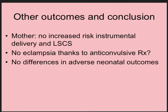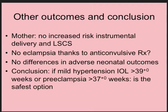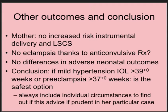In conclusion, the induction of labour group had significantly less hypertension and hence less use of antihypertensive drugs — that was the main difference found in this study. The mothers had no increased risk for instrumental vaginal delivery or caesarean section when induced, and eclampsia did not occur in either group, due to prudent use of magnesium sulfate IV. There were no differences in adverse neonatal outcomes. The conclusion: for mild hypertension, induction of labour after 37 weeks is recommended, and for preeclampsia with signs of organ dysfunction, after 37 weeks is the safest option.